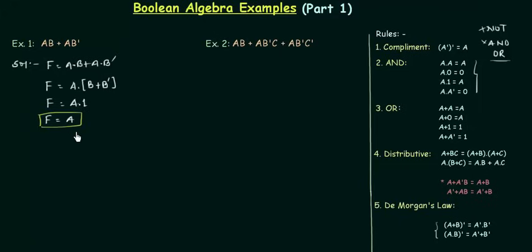So this function AB + AB' is equal to A simply. Now you can prove this by using the truth table. So let's do it quickly.